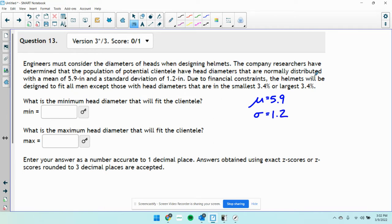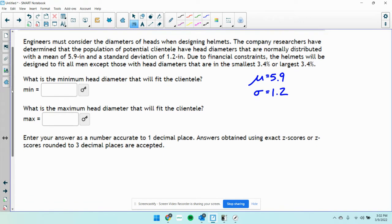Due to financial constraints, the helmets will be designed to fit all men except those with head diameters that are the smallest 3.4% or largest 3.4%. What are those values?